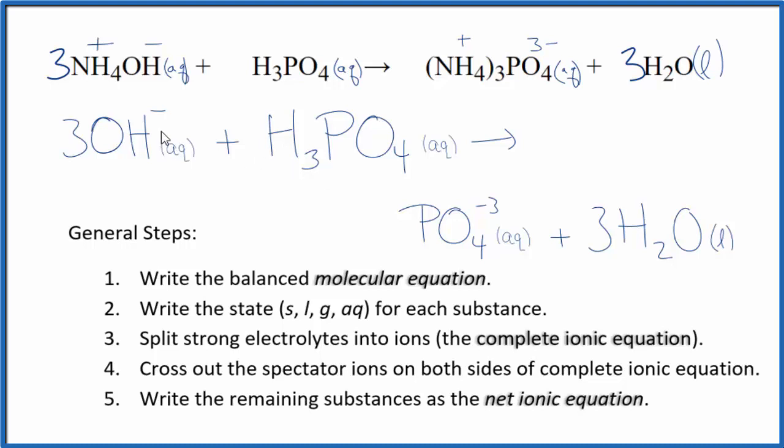Note that charge is balanced. We have three times one minus, so over here we have three minus. Product side, we have three minus as well. If we count up the atoms, they'll be balanced as well. The key here with this one is realizing that phosphoric acid, even though it's aqueous, is a weak electrolyte, a weak acid. So it will not break apart in our net ionic equation.